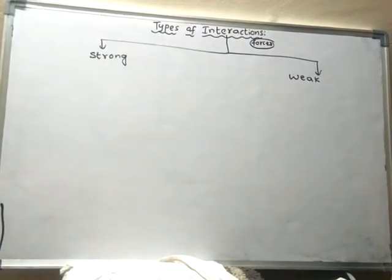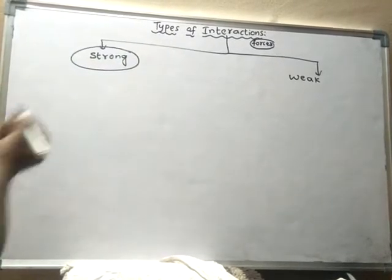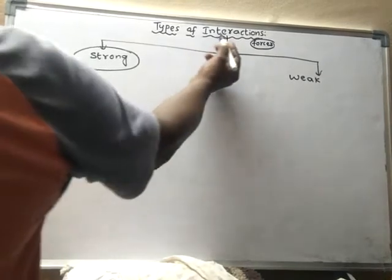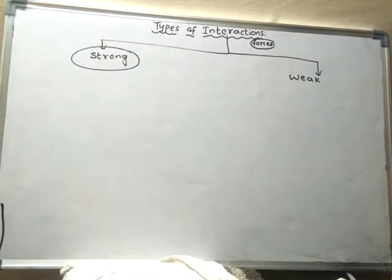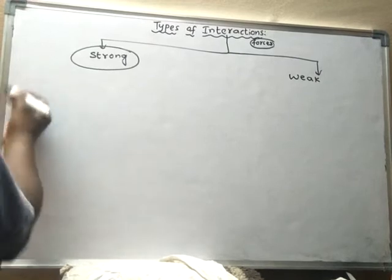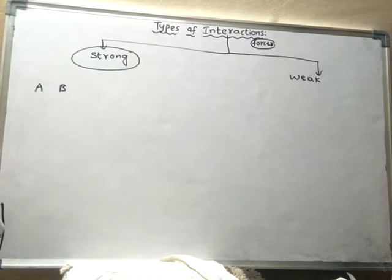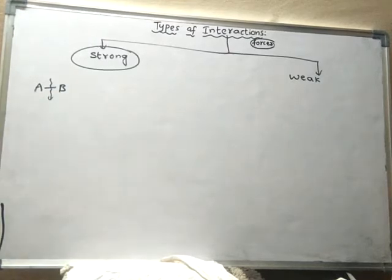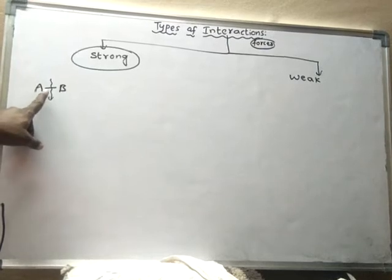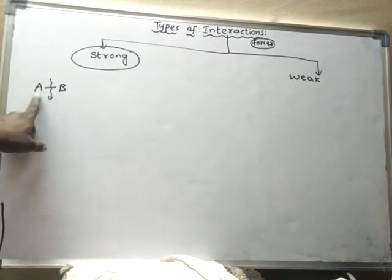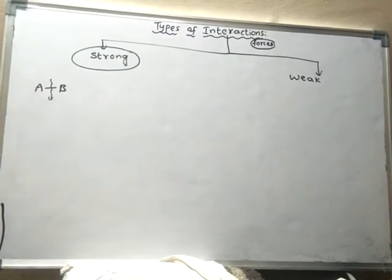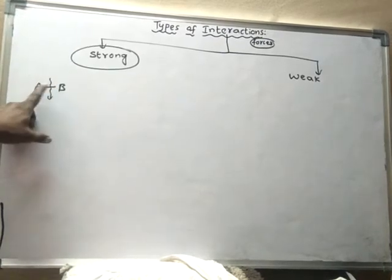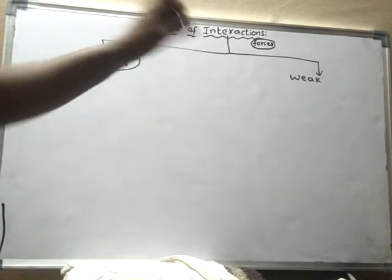What are strong forces? When the force of attraction is very strong between atoms or molecules, then those forces are said to be strong forces or strong interactions. For example, between two atoms — let us take atom A and atom B — if the forces between atom A and atom B are stronger, then in order to break up the bonds between these two atoms and to make them into free atoms, it requires more energy. So when the bond requires more energy to break into free atoms or free particles, then the forces between these two are said to be strong interactions or strong forces.